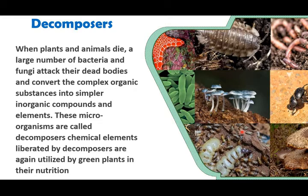Next, we shall see the third component — the decomposers. These organisms play an important role in decomposition and recycling of nutrients in an ecosystem. When plants and animals die, a large number of bacteria and fungi attack the dead bodies and convert complex organic substances into simpler inorganic compounds and elements. These microorganisms are called decomposers. The chemical elements liberated by decomposers are again utilized by green plants in their nutrition. Thus, the decomposers play a vital role in recycling of nutrients in an ecosystem.